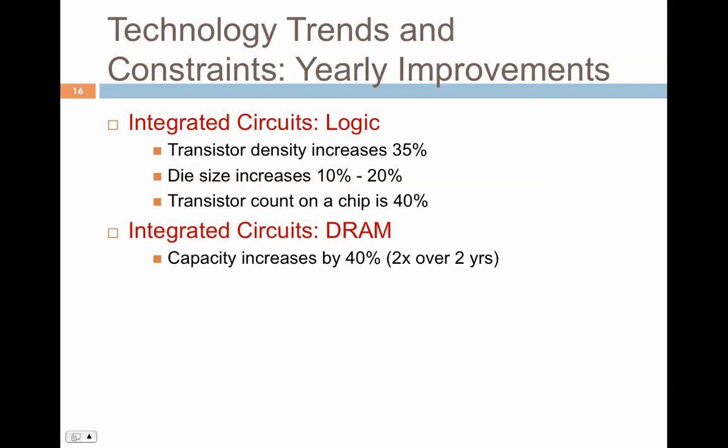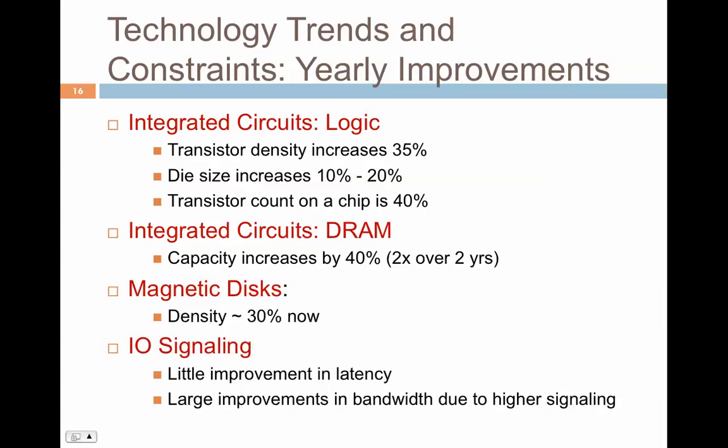Today we are seeing some limitations with DRAM design, and as we go into the lecture we'll see what those limitations are. That's why people are looking at newer technologies like PCM, or phase change memory, which may replace DRAM in the future. On the disk side, density is increasing around 30% — we can put multiple disks and look into cylinders when reading different sectors.